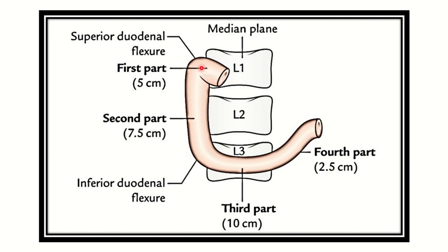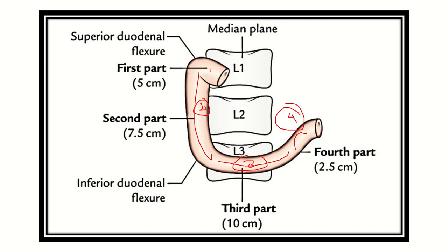We can see the lumbar vertebral level. This part is the first part of the duodenum. From here up to there is the second part. Then up to here is the third part, and this part is the fourth part. So these are the total four parts of the duodenum: first, second, third, and fourth part.